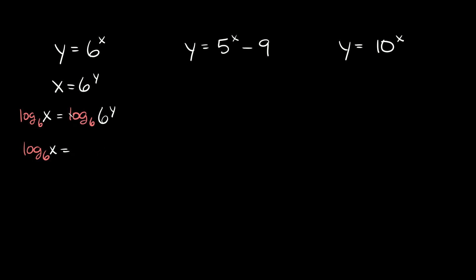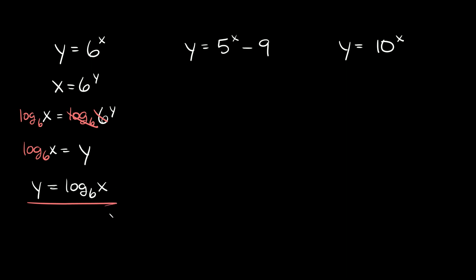The log base 6 and the 6 cancel out, so all we're left with is what's in the exponent, which is just y. So you can flip it and write it as y is equal to the log base 6 of x. This is our inverse function right here.